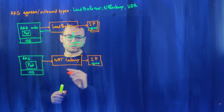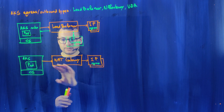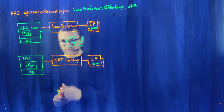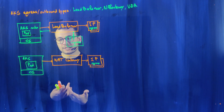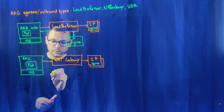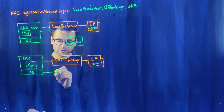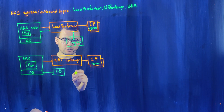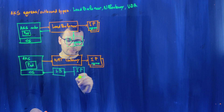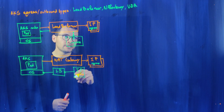With the NAT gateway, as with the load balancer, we can have one or multiple egress IP addresses. For ingress traffic in this mode, if you create a Kubernetes service of type LoadBalancer, a new load balancer with its own public IP will be provisioned to manage ingress traffic into the cluster.